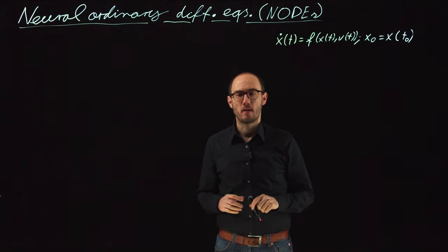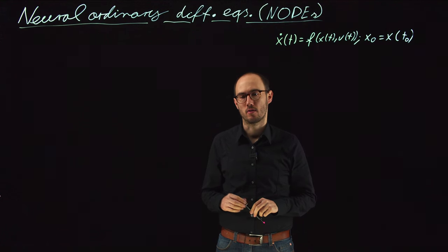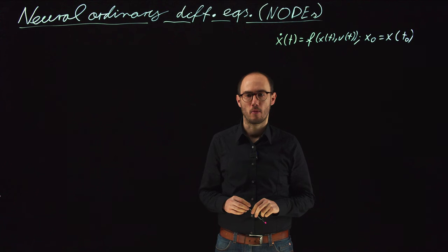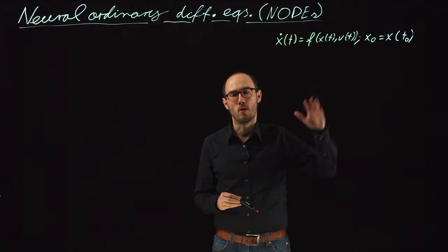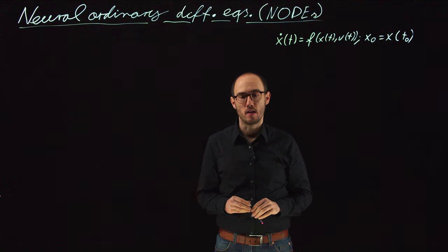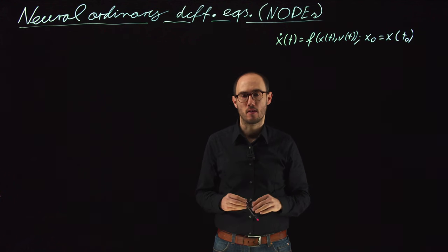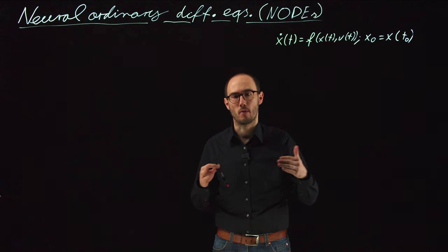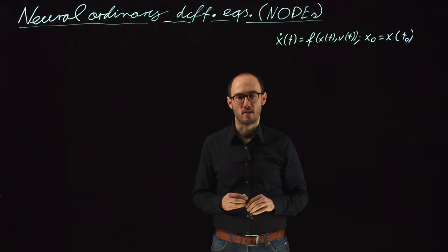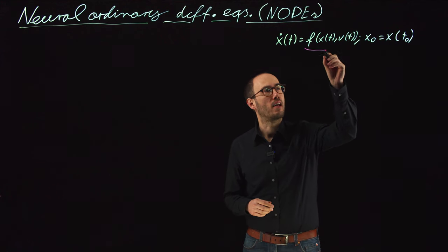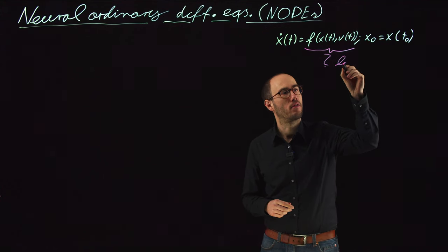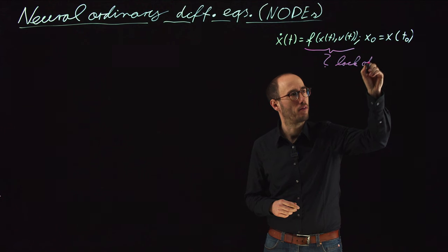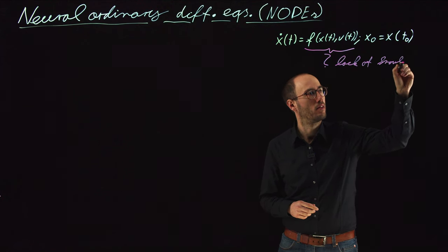Hey everyone, in this video we are going to deepen our knowledge about nonlinear system identification and we will use the so-called neural ordinary differential equations, or so-called NODEs. The use case of NODEs is that we want to model a potentially nonlinear ODE, and in contrast to our previous videos where we did parameter identification — where we used structural knowledge on the system — we are now going to assume that we exactly lack this pre-knowledge. We say that we have no knowledge of the system structure.